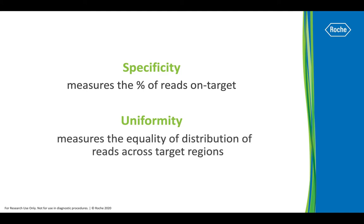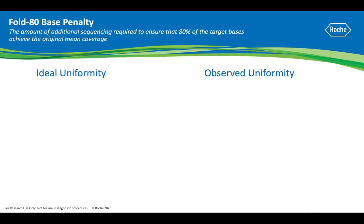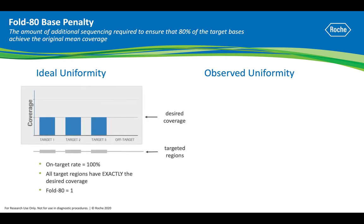The Fold 80 Base Penalty is one metric used to measure uniformity. Fold 80 Penalty is the amount of additional sequencing that's required to ensure 80% of the target bases achieve the original mean coverage. When ideal uniformity is achieved, shown on the left, the on-target rate is 100%. With no off-target reads and uniformly distributed reads across all of the target regions, the Fold 80 would be equal to 1. In other words, no additional sequencing would be needed because the mean coverage would be consistent across all targets.